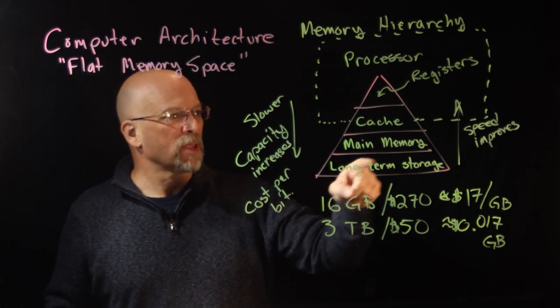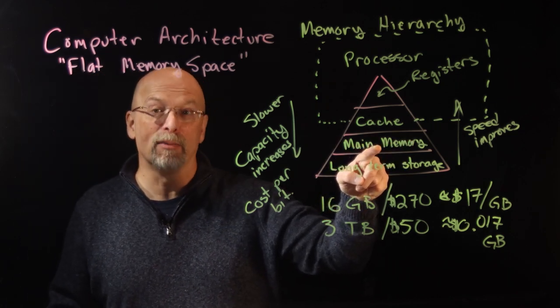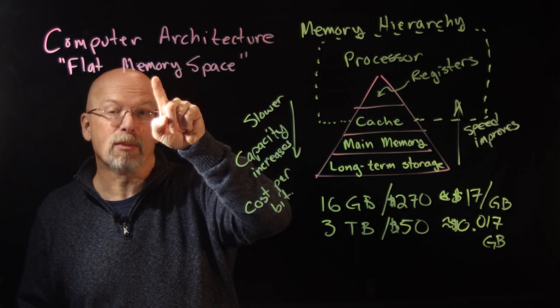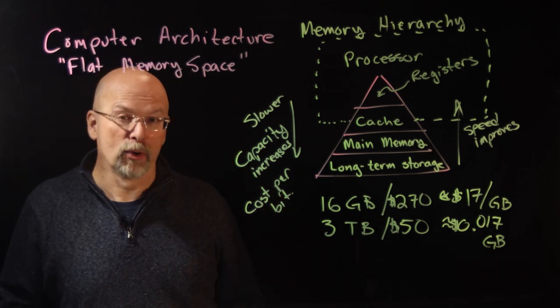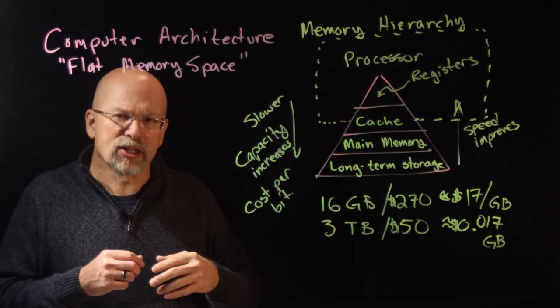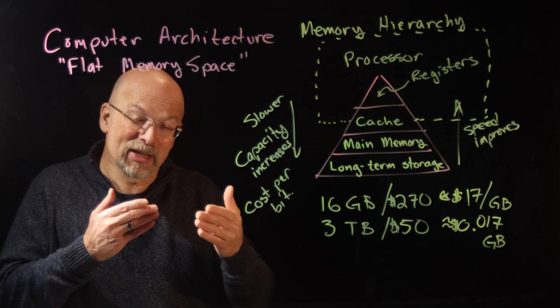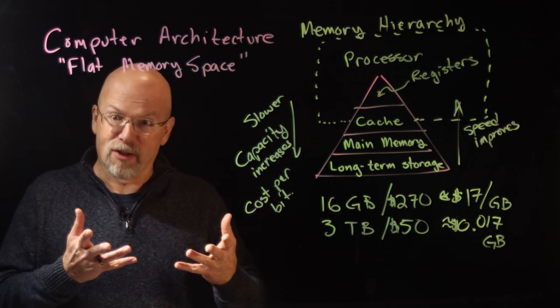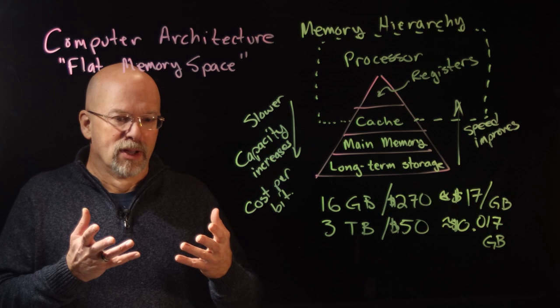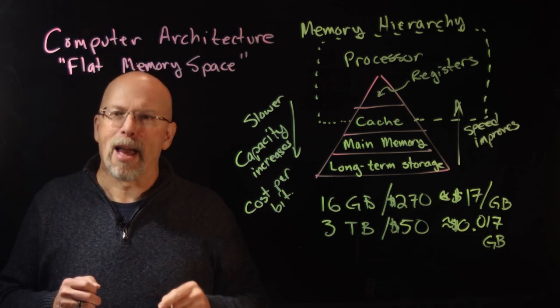In the next lesson what we're going to do is we're going to back our way out and take a look at main memory specifically—main memory that's addressed in the flat memory space—and we're going to show how the memory interacts with the processor and how we can use that same exact interface to interact with specific hardware, for example controlling LEDs or motors using something called memory mapping.